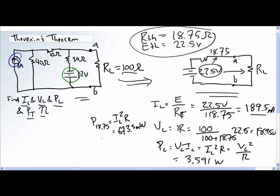Now it's asked to find, so that's basically power to the 18.75 plus the power to the load is equal to our total power. So total power is 3.591 watts plus the 673 milliwatts, 4.264 watts.